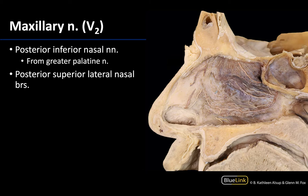Last but not least, there are some V2 branches that innervate the lateral nasal wall region. You can see the posterior inferior nasal nerve branches right around this region, near the arterial branches of the sphenopalatine. The posterior inferior nasal branches come off within the greater palatine canal and then head to the nasal wall. Up here we have the posterior superior lateral nasal branches, which are direct branches from V2 and innervate the posterior portions of the lateral nasal wall and superior and middle nasal concha.